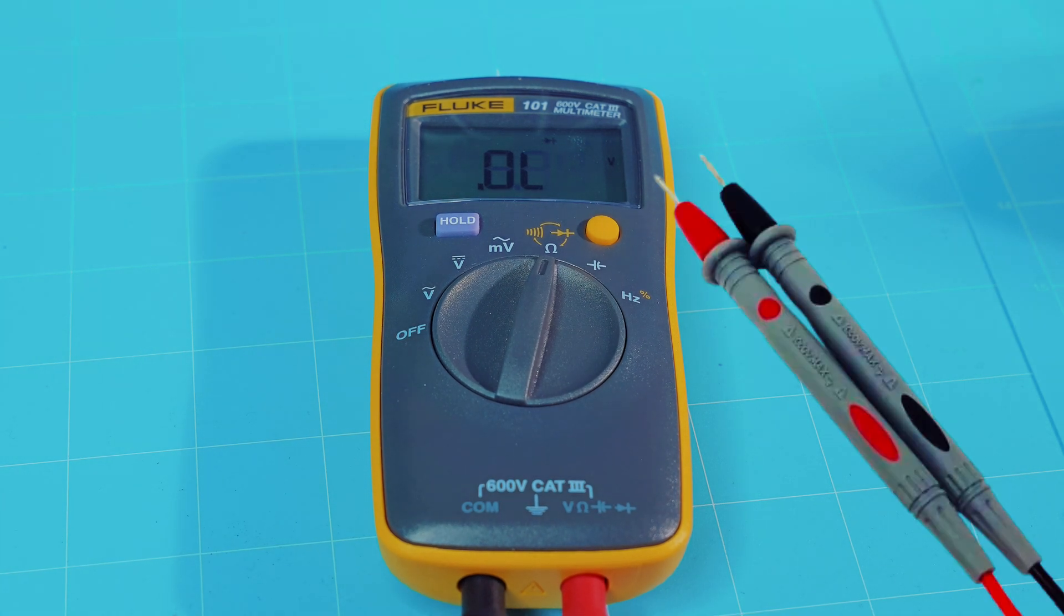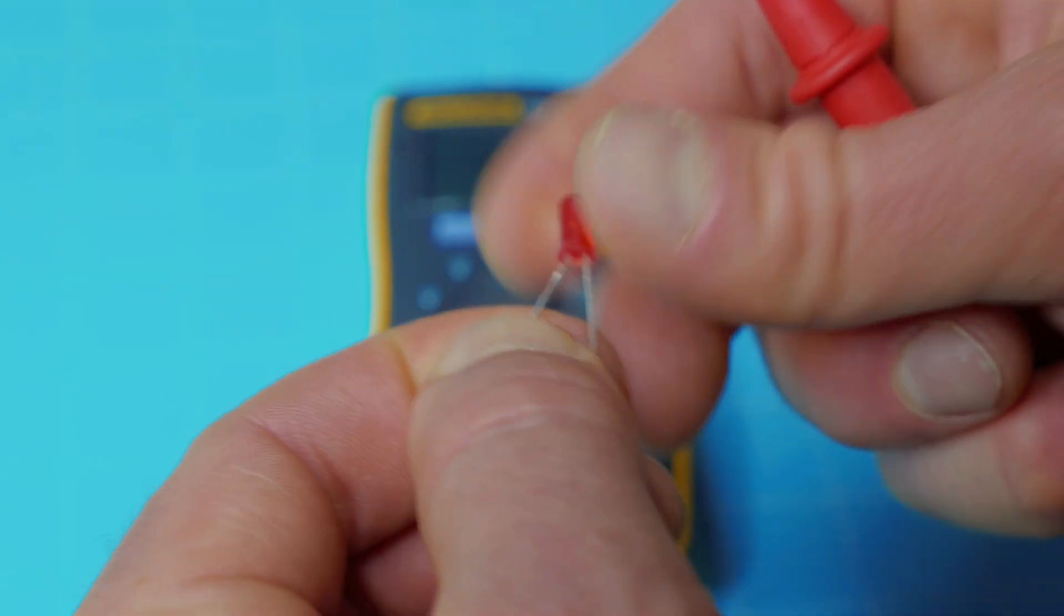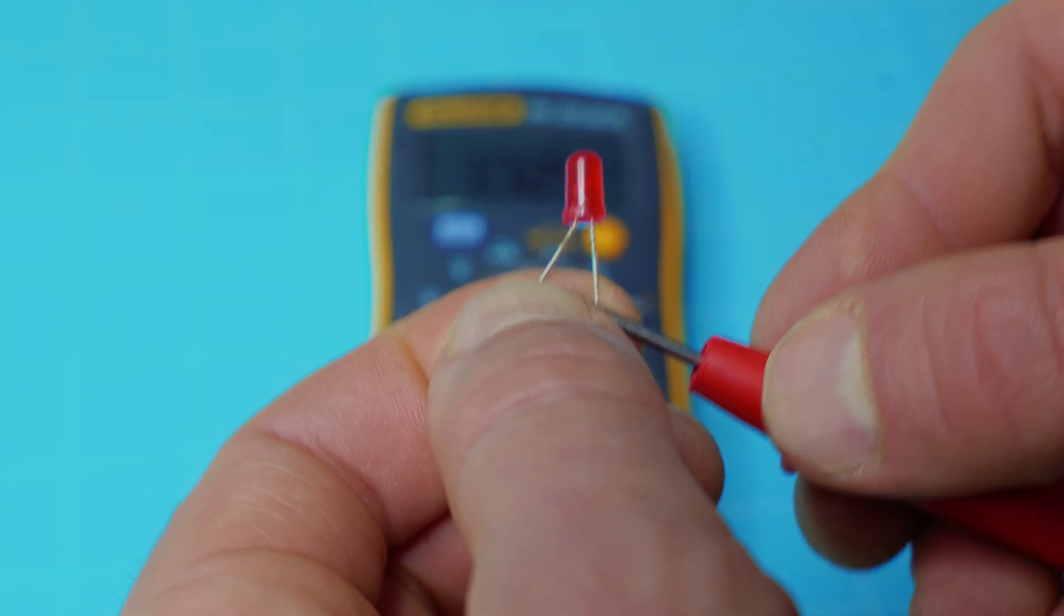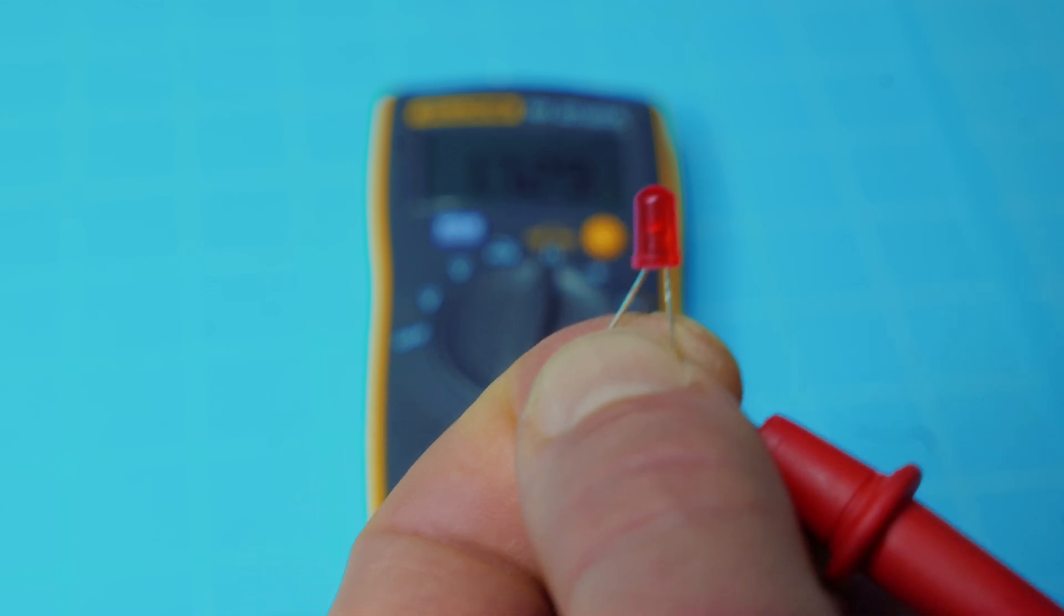So what you have to do with these is use your multimeter leads. Okay folks, I've got my black lead on the shorter lead of the LED, and I've got the red on the longer. And I'll go ahead and shut the light off, and you'll be able to see that it is lit up.